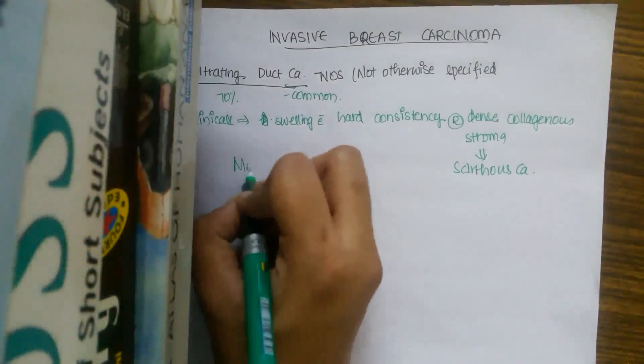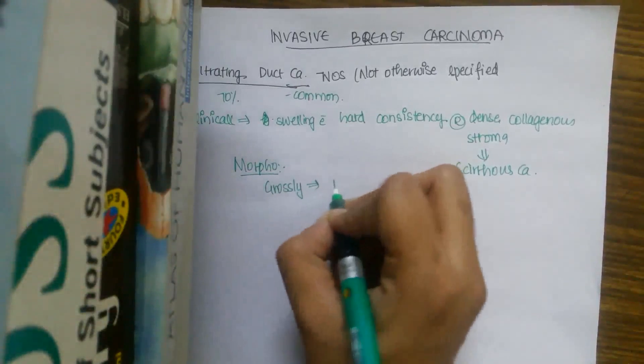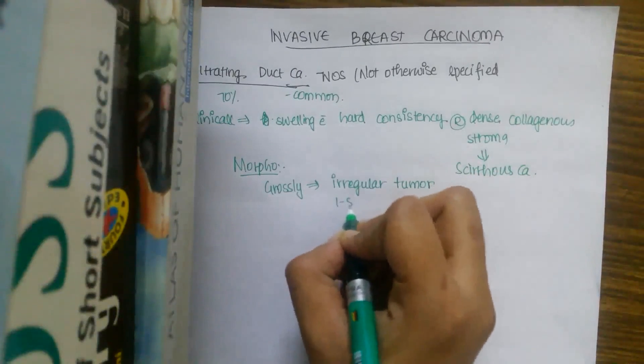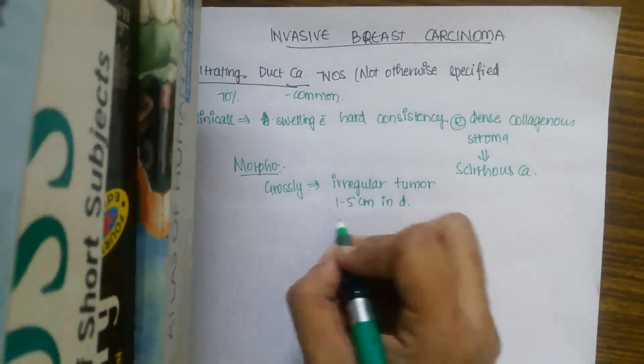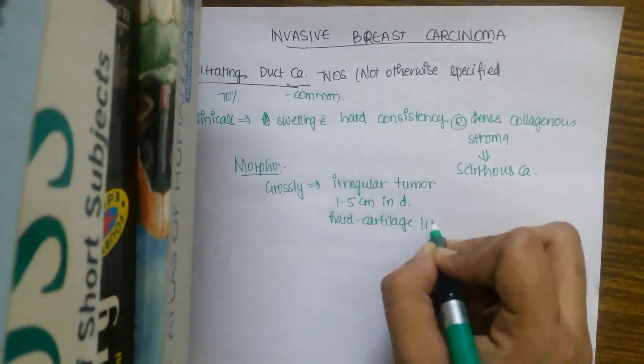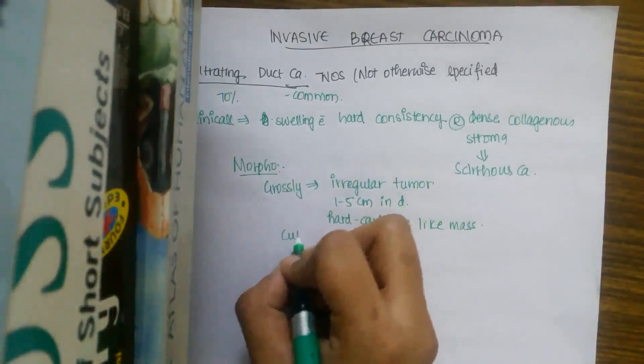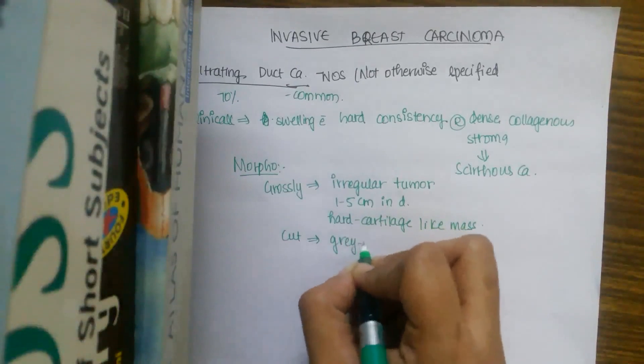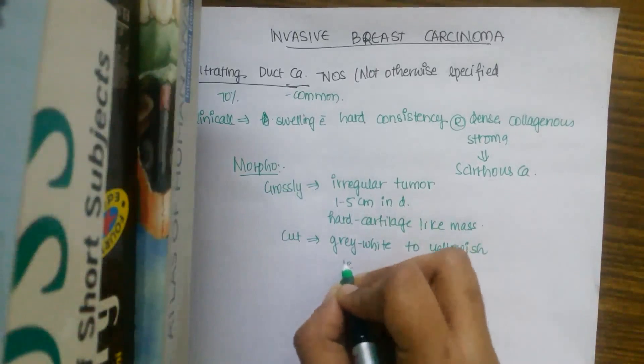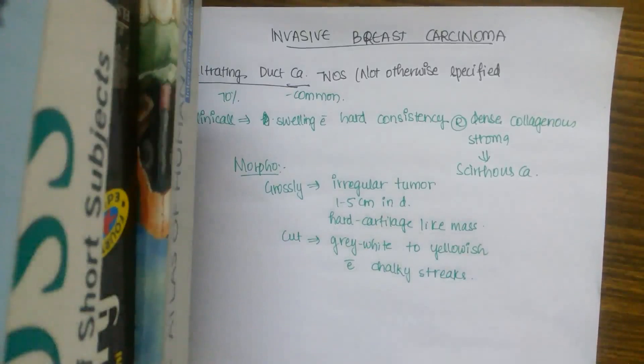So right now if we come to the morphological features of the breast, if it is grossly, the tumor is irregular. Irregular tumor which is 1 to 5 cm in diameter, there is hard cartilage-like mass is seen and on cut surface, the tumor is grey-white to yellowish in color with chalky streaks. And it extends irregularly.